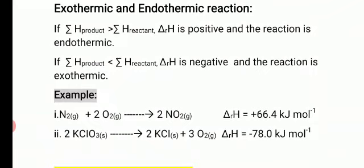If ΔrH is positive, the reaction is said to be endothermic. This means energy is absorbed by the system from the surroundings — that's why ΔH increases and gives a positive value. Endothermic reaction is the reaction in which heat is absorbed. The opposite is exothermic reaction, where heat is given out by the system to the surroundings.